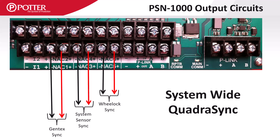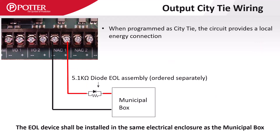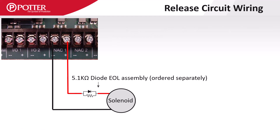QuadraSync is supported on PSN1000 Intelligent Power Supplies, allowing four different strobe sync protocols to be used on separate circuits. The P-Link connection at the power supply provides master synchronization across the entire fire alarm system. Both NAC and IO circuits can be configured for municipal box service or releasing applications. Both options require an end-of-line diode resistor assembly, which is sold separately.